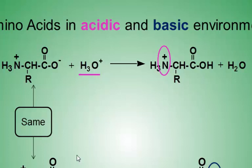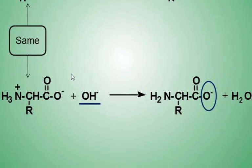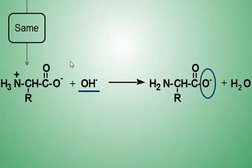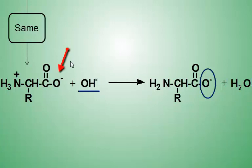Also note the water byproduct from this reaction. If we put an amino acid in a basic environment with ample hydroxide, the hydrogen ion attached to the nitrogen of the amine group is removed and combines with the hydroxide to form water. The oxide of the carboxylate group is still intact, so the amino acid went from a zwitterion to an anion.